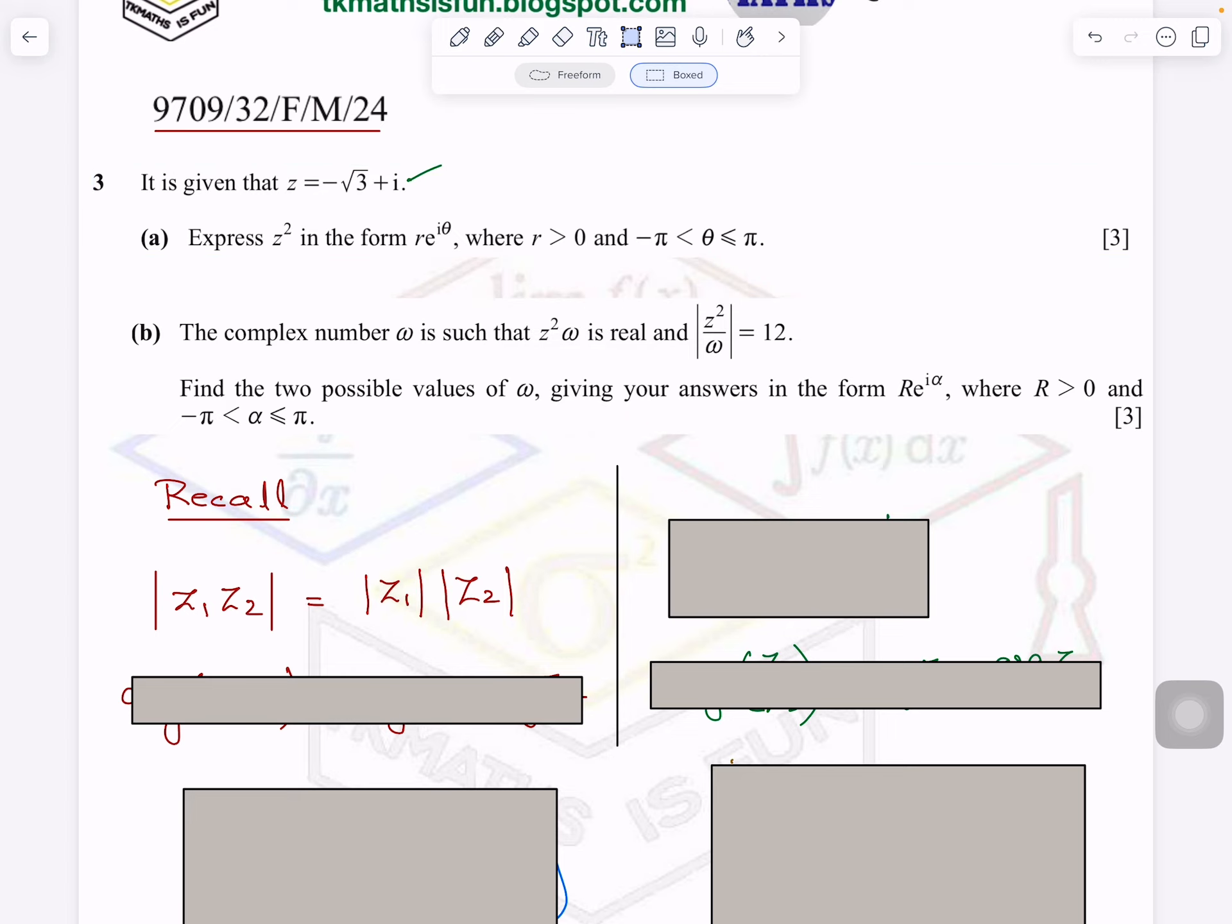Because you see Z square I have written here in the question, Z square can be written later as Z times Z. So that's why I am telling you to recall this formula. I will apply this method as well. So |Z1 × Z2| equals |Z1| times |Z2|, and argument of Z1 times Z2 equals argument of Z1 plus argument of Z2.